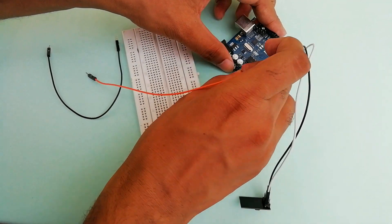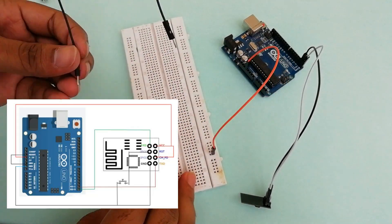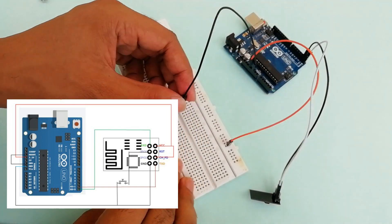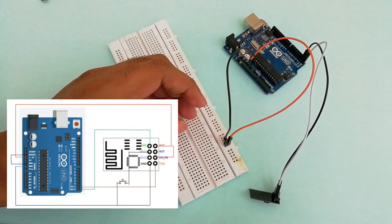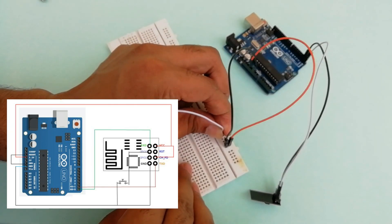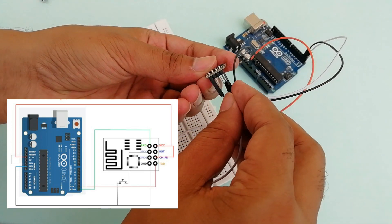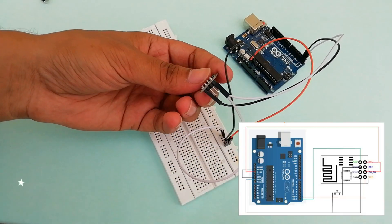The ESP8266 module works on 3.3 volt power supply, and anything greater than that, like 5 volts for example, will kill the SoC. So the VCC pin and CH_PD pin of ESP8266 module are connected to the 3.3 volt supply.